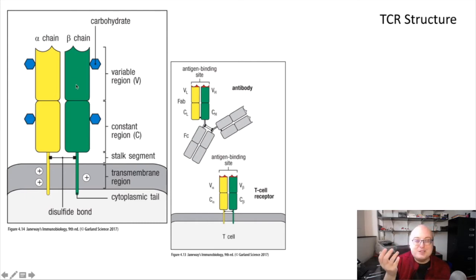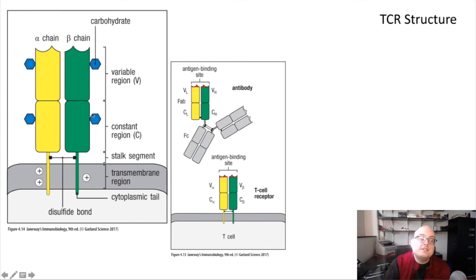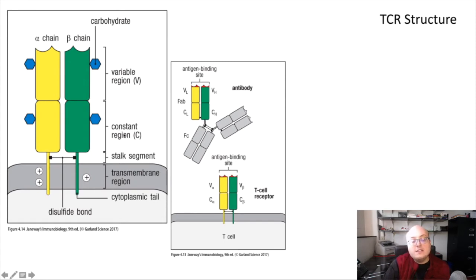The variable region is the part that binds to the antigen. It needs to vary quite a bit so that it can recognize all the different types of antigens that there are. The domains closer to the plasma membrane are the constant regions—they don't display as much variability and look pretty similar across all T-cell receptors. The T-cell receptor is anchored in the membrane.